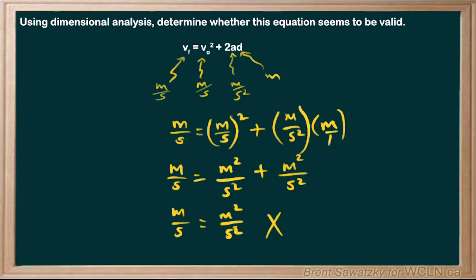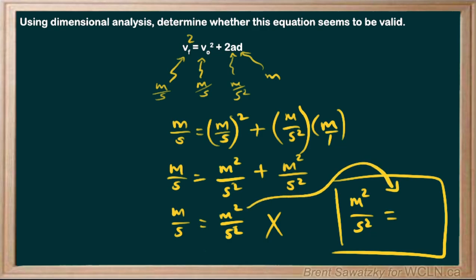And the equation that you'll be using further on in this course has a squared there. And so in that case, the version that we would have, the correct one, then the left would be meters squared per second squared, and the right exactly as we figured it out, meters squared per second squared. And then that would be valid.